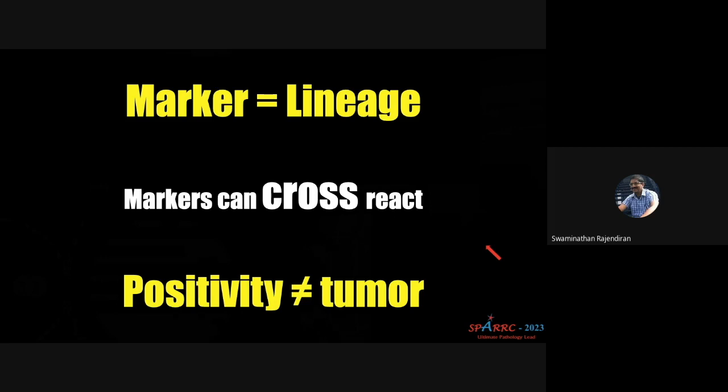Most markers tell you the lineage of the cell — they are not telling whether it is tumor or not. So if a marker is positive it does not equal tumor. For example, TTF — the thyroid transcription factor — is positive in normal thyroid tissue and normal bronchial lining epithelium; it just says it is of thyroid or lung origin. 95% of markers are lineage markers. Some markers, like glypican in hepatocellular carcinoma, indicate tumor when present. Also, markers can cross-react — cytokeratin can be seen in some non-epithelial components.